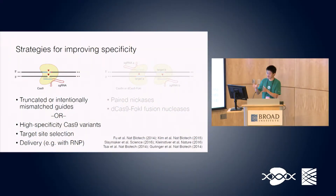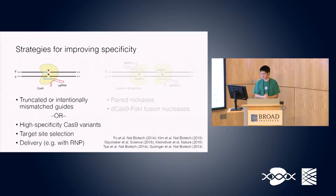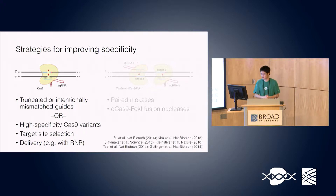I've separated this into two lists. One is the strategies that only involve using a single guide to create a double-stranded break with just Cas9. Several very successful strategies have been pioneered by many people, including those in the Boston area, including truncated or intentionally mismatched guides. If you take your sgRNA and shorten it by two or three nucleotides, or build in some mismatches toward the end of the guide intentionally, that can have a very large effect in decreasing off-target effects.